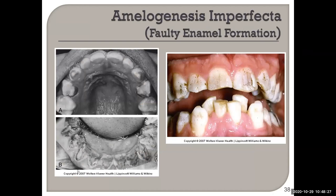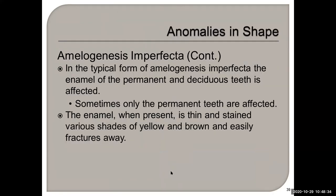In a typical form of amelogenesis imperfecta, the enamel of both the permanent and deciduous teeth are affected, though sometimes only the permanent teeth are affected. When enamel is present it is very thin and stained in various shades of yellow and brown, and with amelogenesis imperfecta the enamel will fracture away so that only the dentin is exposed.